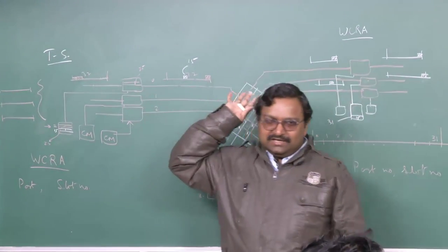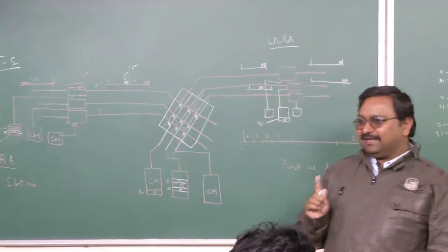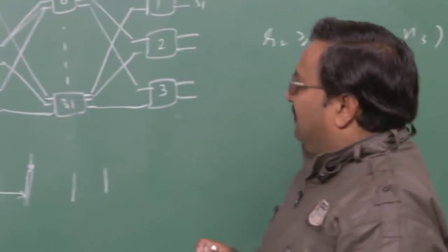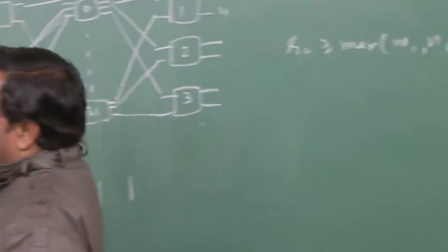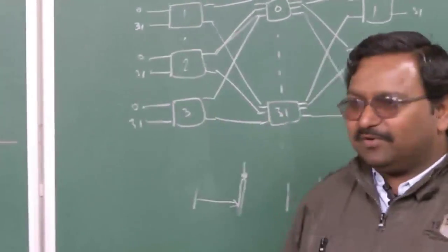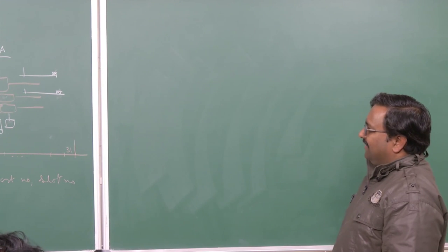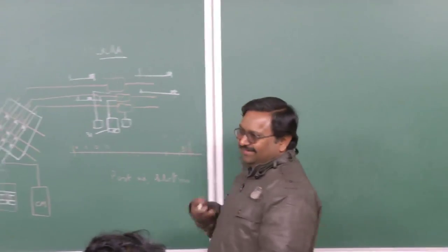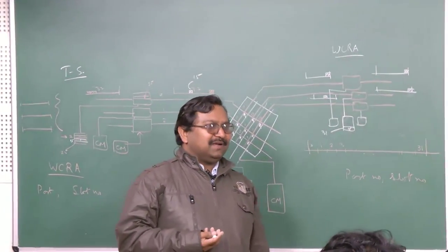Packet switching systems are not usually implemented in this fashion unless you can write the control memory in a large burst — the whole memory, not a single word. Now, coming to solving this part of the problem. For circuit switching it still becomes important. How will it be done? A quiz was given earlier asking you to draw a schematic for write acyclic and read cyclic configuration.